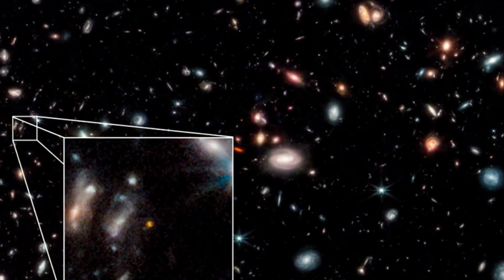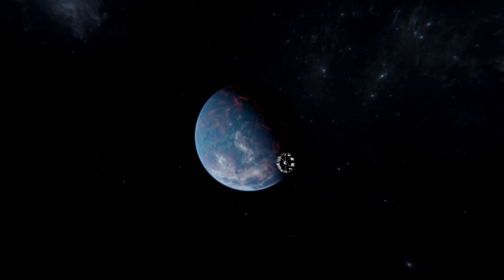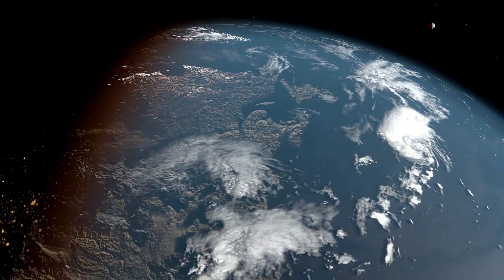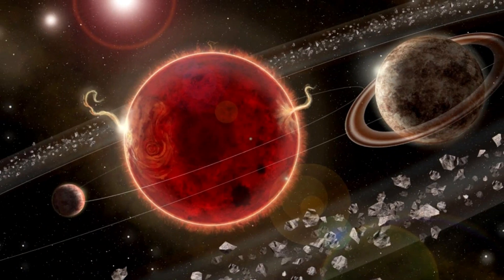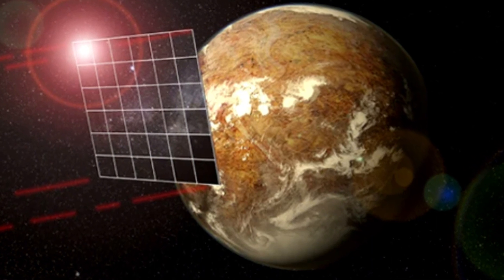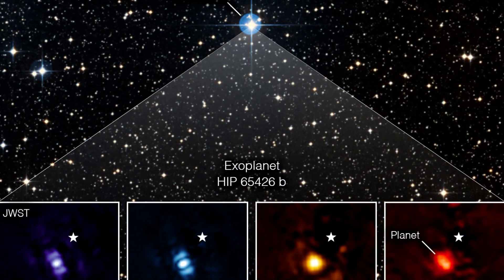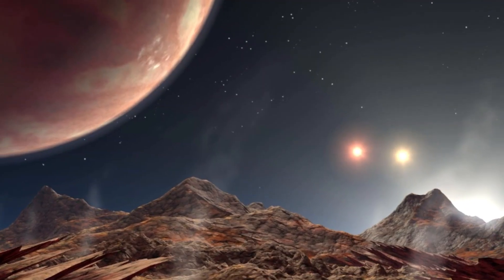First, its proximity to Earth makes it an ideal target for further exploration and study. Scientists believe that studying planets in our own galactic neighborhood can provide insights into the conditions necessary for life to exist elsewhere in the universe. Additionally, the fact that Proxima b is located within the habitable zone of its star system makes it an exciting target for astrobiologists, who are interested in studying planets that could potentially support life. While it is still unknown whether Proxima b actually harbors life, the planet's location and characteristics make it a promising target for further investigation.